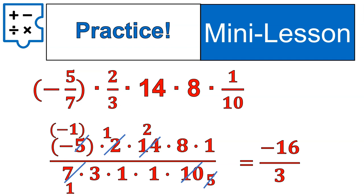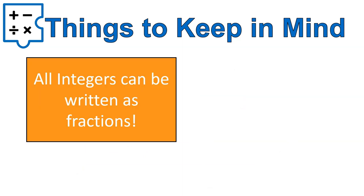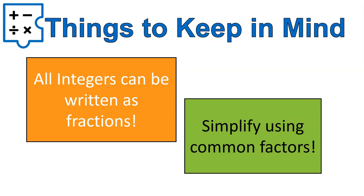Again, if your teacher wants you to write it as a mixed number, you would do that as a final step. All right, final end of lesson, things to keep in mind. All integers can be written as fractions and simplify using common factors. You can do this using prime factorization. You can do this just recognizing certain factors of each number. You can do this in multiple steps. It's absolutely fine, but this is a great trick that helps you kind of simplify math a little bit quicker. I hope it was helpful for you. Have a wonderful day.